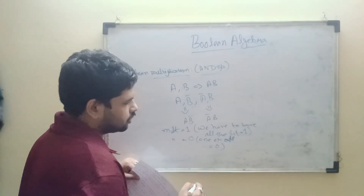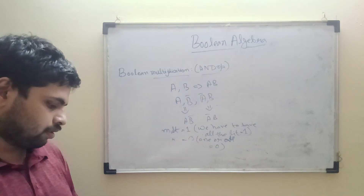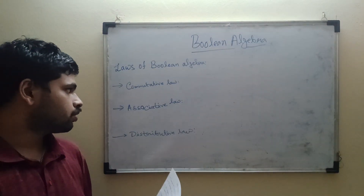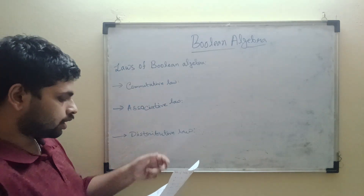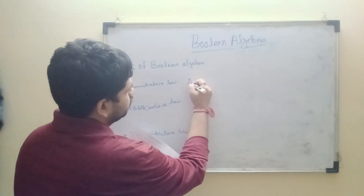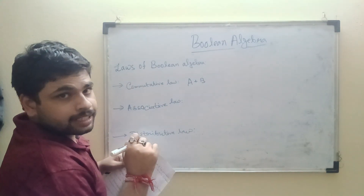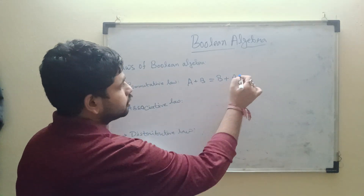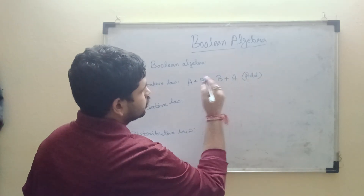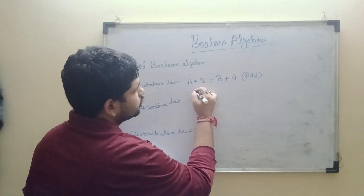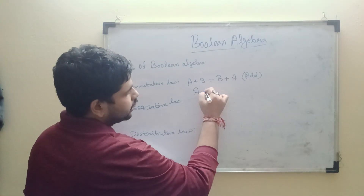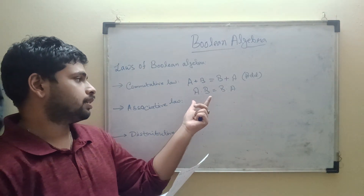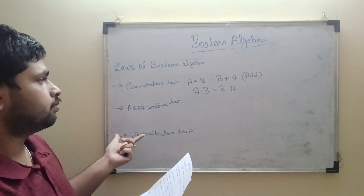Next we will discuss the three laws of Boolean algebra. The first is the commutative law. For addition: A + B = B + A. For multiplication: A·B = B·A. In other words, the order of the variables does not affect the result.